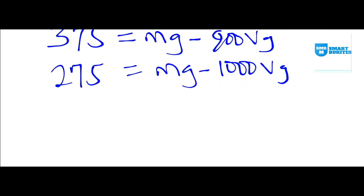Now we can subtract one from the other equation. 325 minus 275 gives me 50, equals mg minus mg equals 0. Then minus 900 Vg minus minus turns to plus, so minus 900 plus 1000, which will be plus 100 Vg. So 100 Vg equals 50.